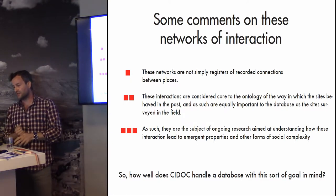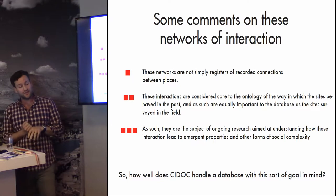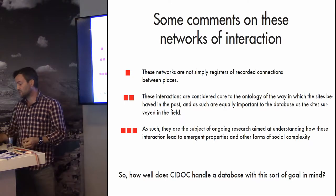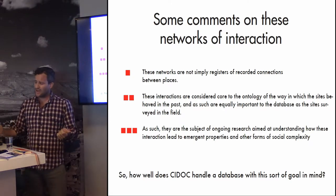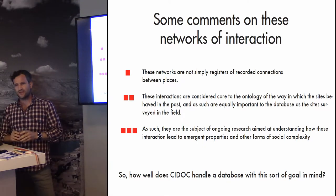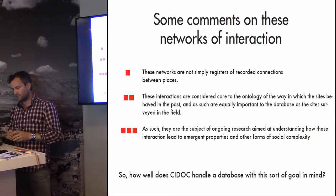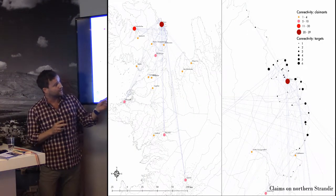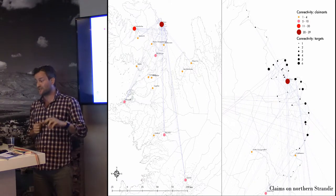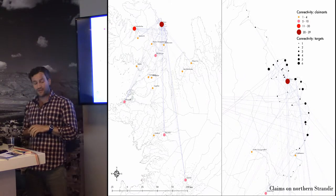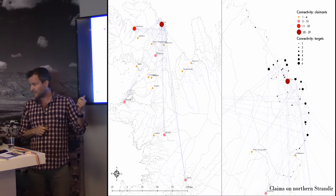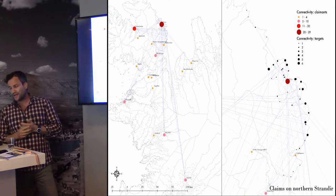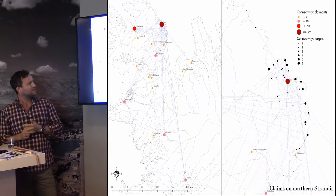The ongoing research using that database concerns how these interactions lead to emergent properties and social complexity. The question is: how well does CIDOC handle a database with this kind of goal in mind — social complexity, connections between places, and so on? The example I want to take is driftwood, which is quite an interesting resource for Iceland.